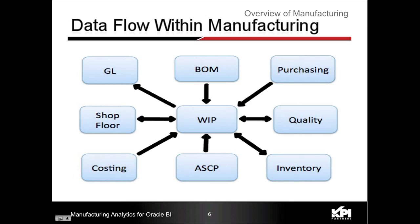The first module is Bill of Material. Bill of Material is a module where you can break down a component into its different child components or sub-components. Going back to my example, if I talk about a desktop as a final component, a desktop can have monitor, keyboard, mouse, cables, etc. So BOM tells WIP that to manufacture a desktop, here are the different sub-components you have to either manufacture or buy, and that information flows from BOM to WIP.